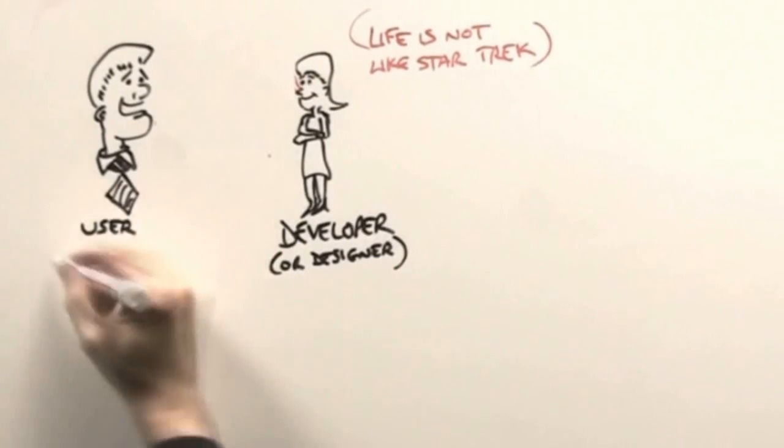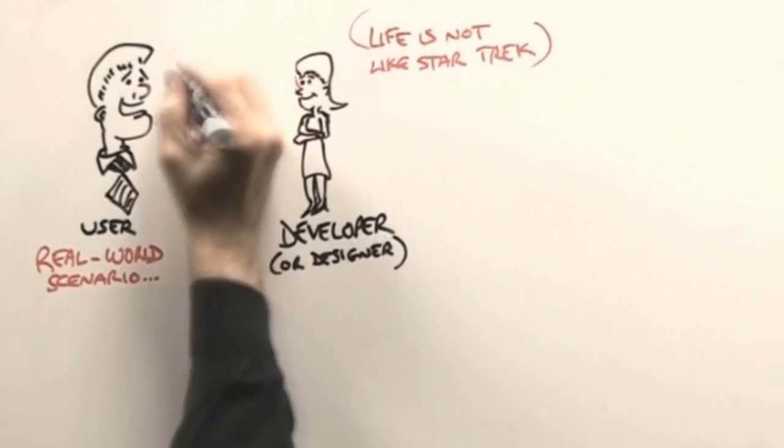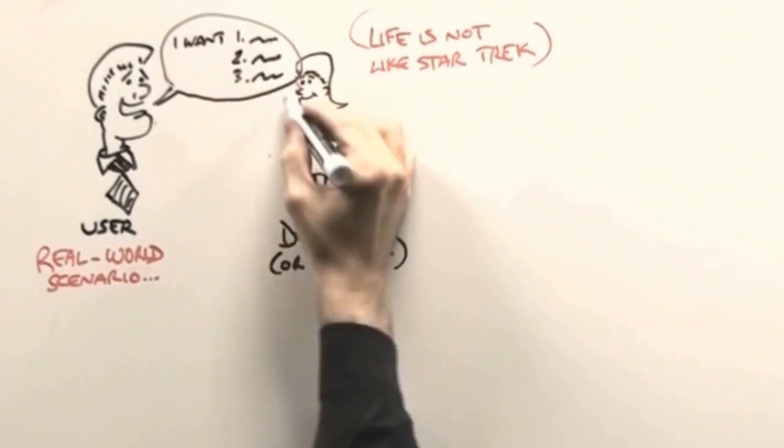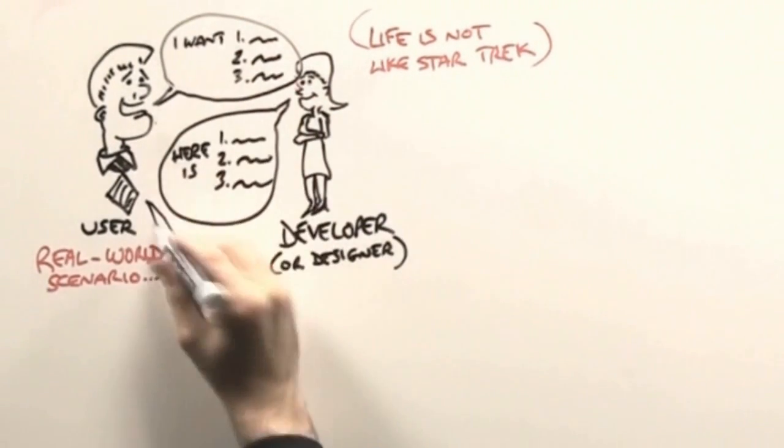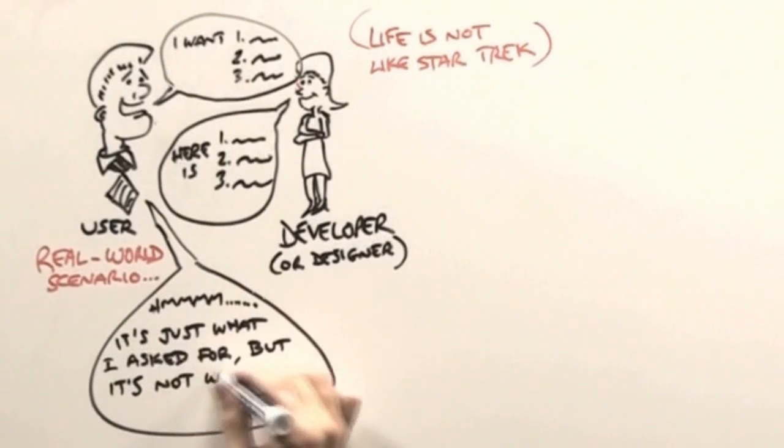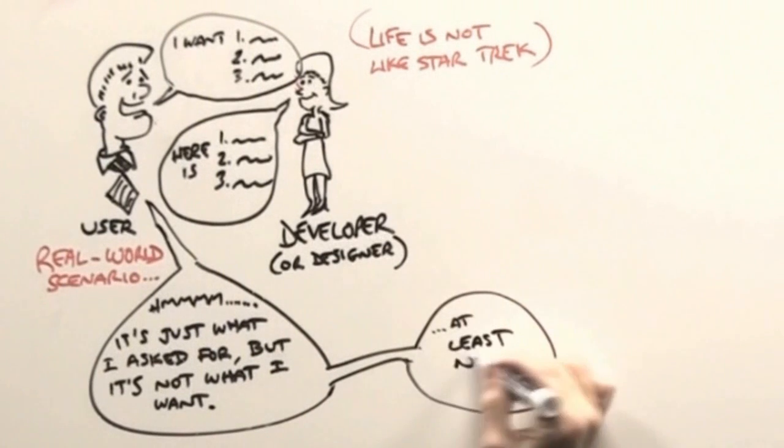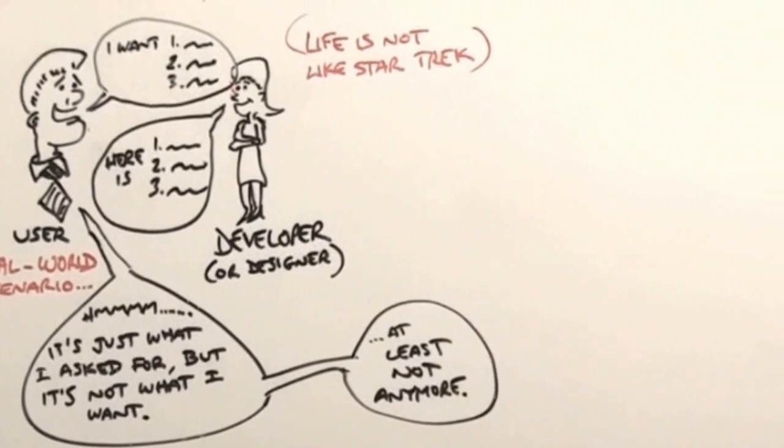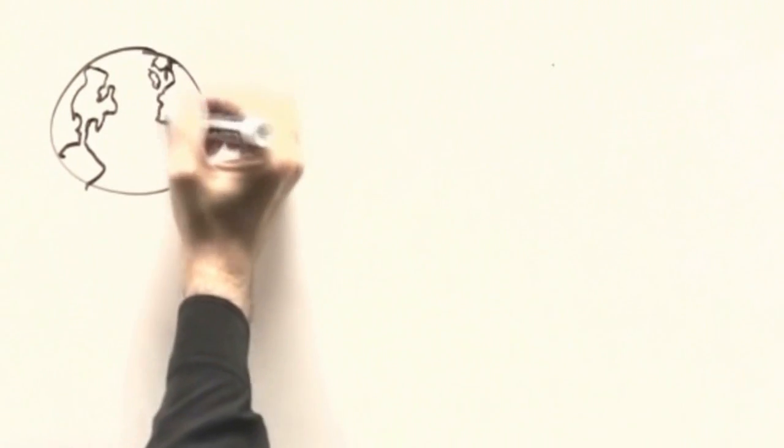But life is not like Star Trek, and mind melds aren't real. In the real world, users ask for requirements the developers try to build to them. And even when they're good at it, on the first try, what we ask for isn't always what we want. Or you build to requirements they are what you want, but not anymore. The world has a way of changing on a fairly regular basis.